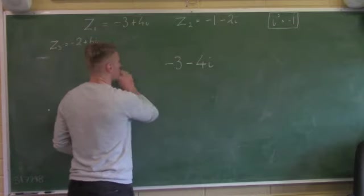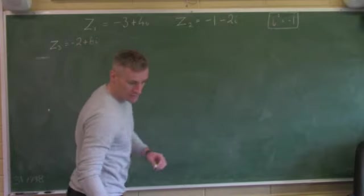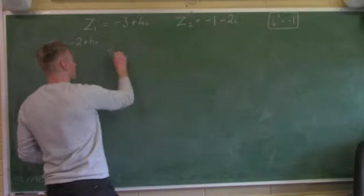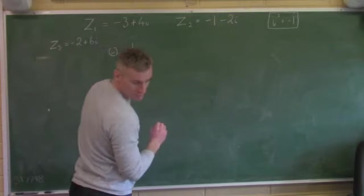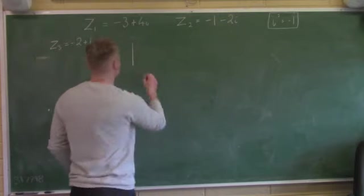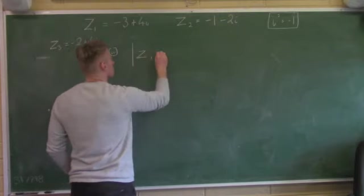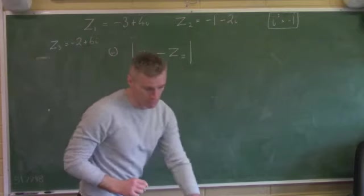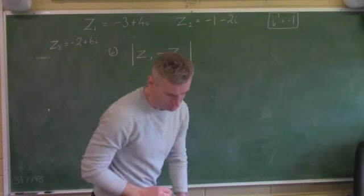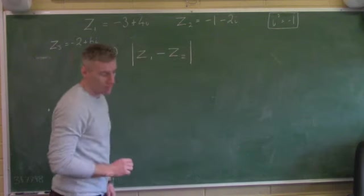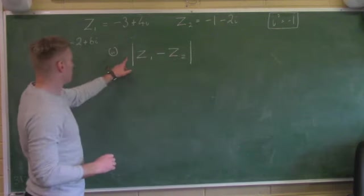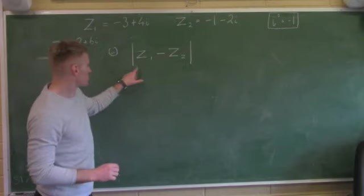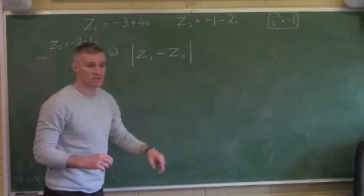So minus 3 plus 4i changes to minus 3 minus 4i. We'll be looking at the conjugate again later when we're doing dividing — it's very important when dividing. Part 3 of part A is finding the modulus. These lines here mean the modulus — how far the point is from the origin, which is 0, 0.